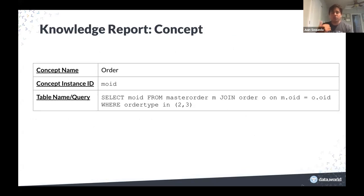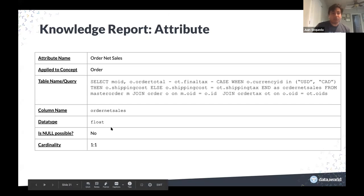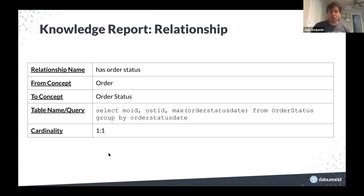With this information you start generating a knowledge report — representing all this knowledge in a document. You report the concepts: there is a concept called an order, it has a definition, here is the query to get the orders. You have an attribute called net sales; after discussion you know the query that gets it, the data type, there should be no nulls, there is a cardinality. What is the relationship between orders and order_status? You may have a table called order_status that stores all historical orders, but you only want the latest order, so you need some aggregation. This was probably not obvious just from looking at the raw data.